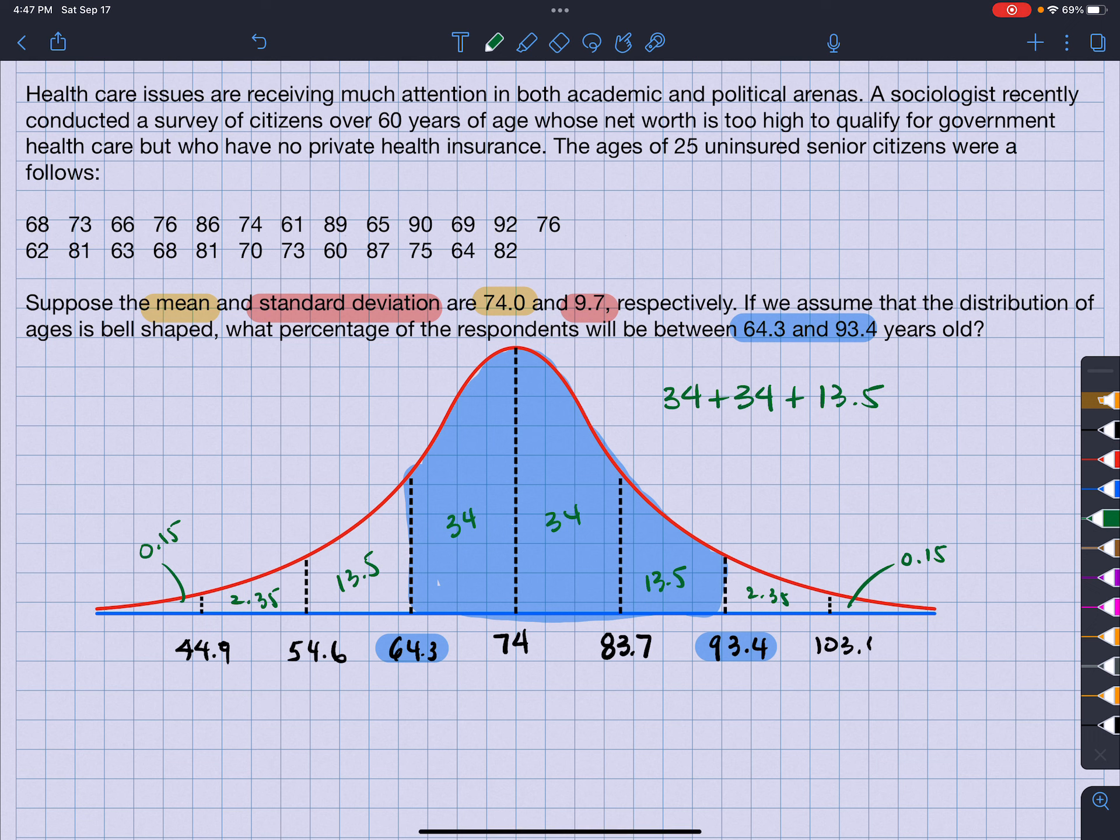Which involves 34, 34, and 13.5. So what does that come out to? Well, 34 plus 34 is 68, plus 13.5, which gives approximately 81.5%. And there we go. Hope that helps. Any questions, let me know.